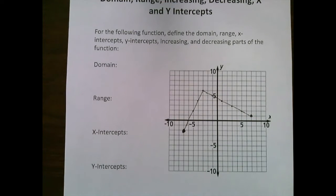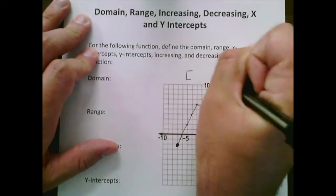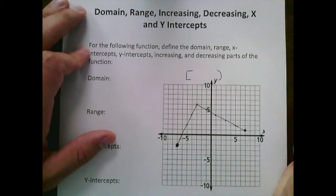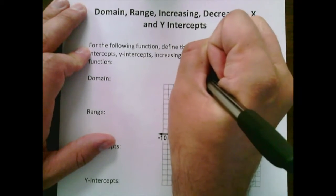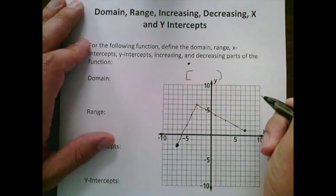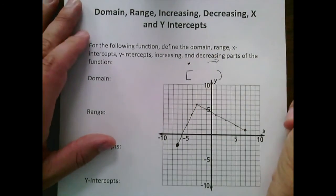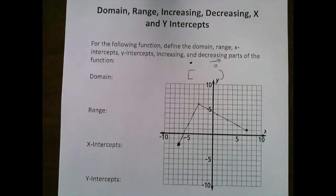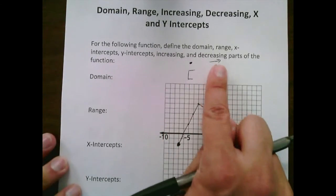We're going to write a lot of this using interval notation, which involves using a bracket or parentheses. A quick review: if the endpoint is a filled-in point, you use a bracket. Anytime you have an arrow continuing on forever, or an open circle, you use parentheses. So filled endpoints get brackets; open circles or arrows get parentheses.